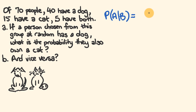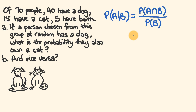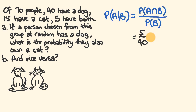We're going to use the formula: the probability of A given B equals the probability of A and B over the probability of B. The probability of A and B — the people who have both — is 5. The probability of B: a person chosen at random has a dog, and 40 have a dog. So it's 5 over 40, which simplifies — 5 goes into both top and bottom — giving a probability of 1 over 8. That person also owns a cat.